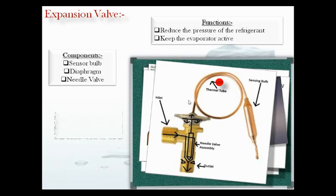There are basically two main types of thermal expansion valve: internally equalized and externally equalized. The difference between them is how the evaporator pressure affects the position of the needle. In an internally equalized valve, the evaporator pressure acting against the diaphragm is the pressure at the inlet of the evaporator. Whereas in an externally equalized valve, the evaporator pressure against the diaphragm is the pressure at the outlet of the evaporator.